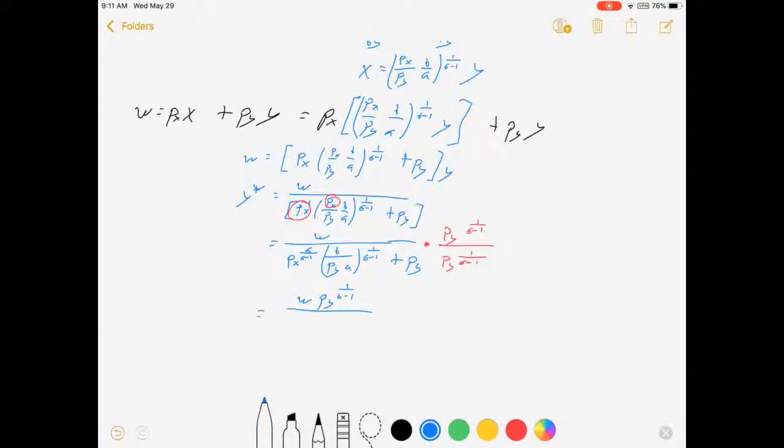If I get w times py^(1/(σ-1)) divided by px^(σ/(σ-1)), that py down there is going to go away. This py, when multiplied by that numerator, it's going to go away altogether. So I'm just going to be left with (b/a)^(1/(σ-1)) plus py, and to add up your exponents, 1 + 1/(σ-1) is σ/(σ-1).